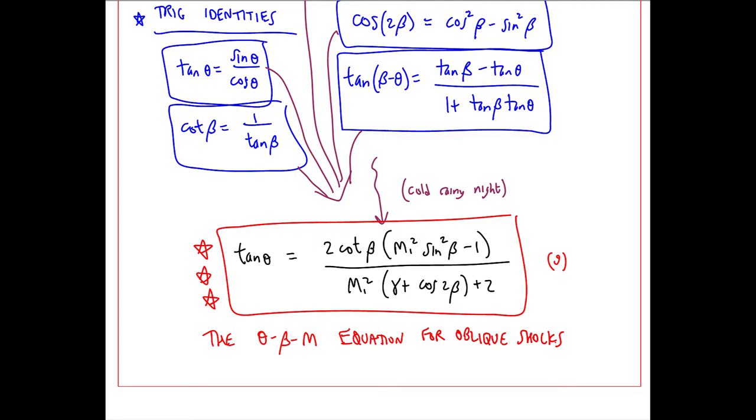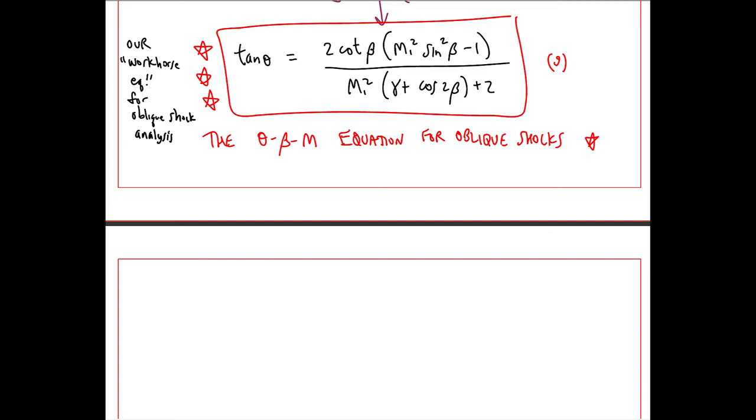This is the famous theta beta M equation for oblique shocks. Here we're applying it at M1 because this relationship requires us to use the upstream Mach number. But it's called theta beta M not theta beta M1. This is our workhorse equation for oblique shock analysis. I give the caveat that this is valid only for ideal gases.